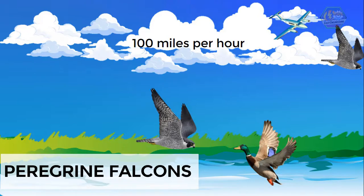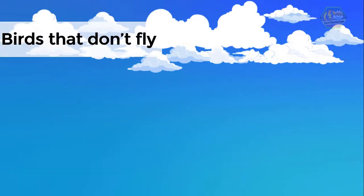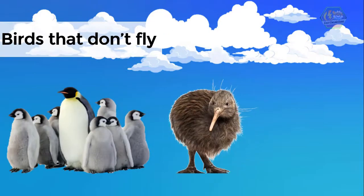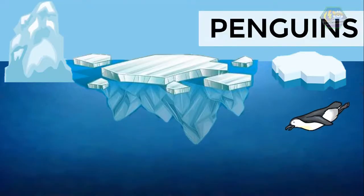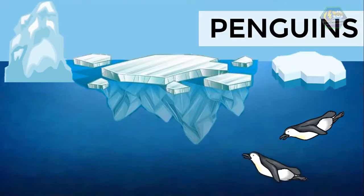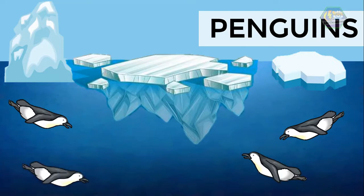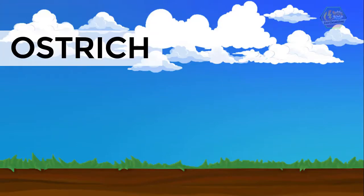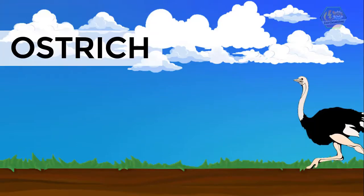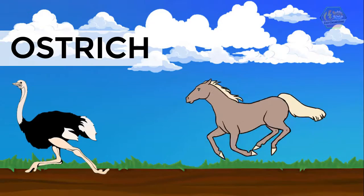Unfortunately, not all birds can fly. Some birds that don't fly are penguins, kiwis, and ostriches. However, even though they cannot fly, they are masters in their own field. Penguins are actually the best bird swimmers and they live in very cold regions. On the other hand, ostriches are very fast runners on land — they can even outrun a horse!